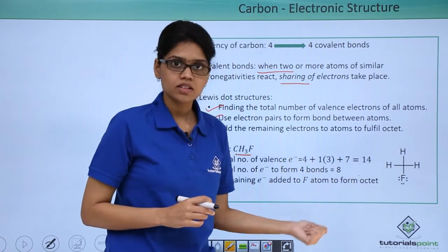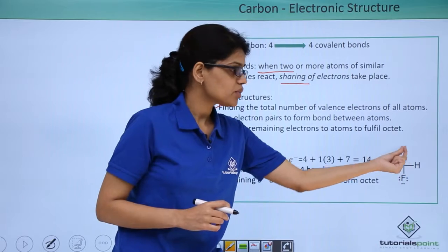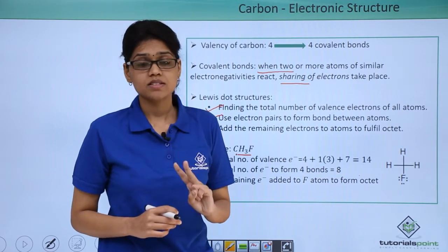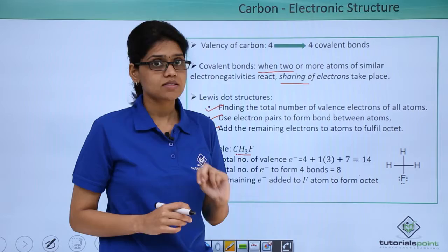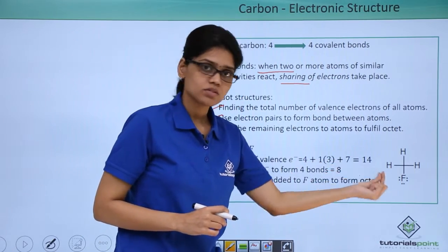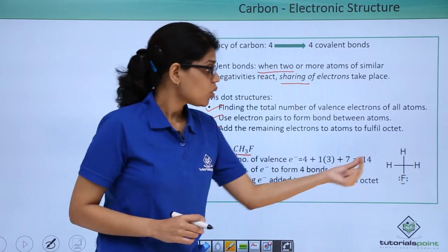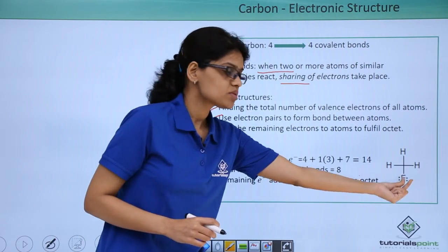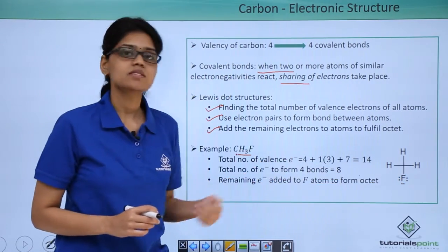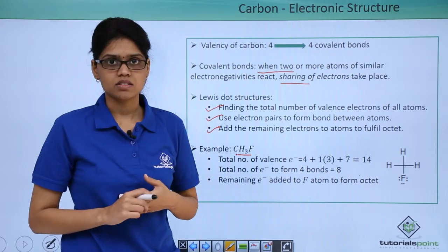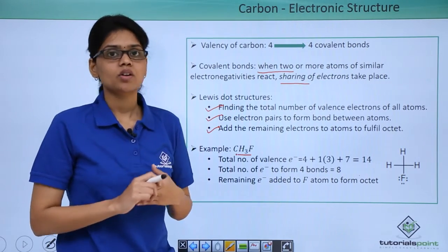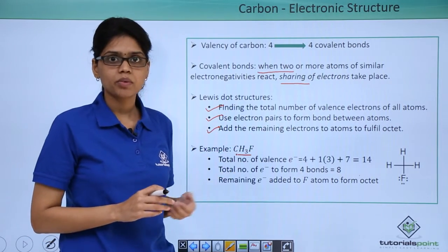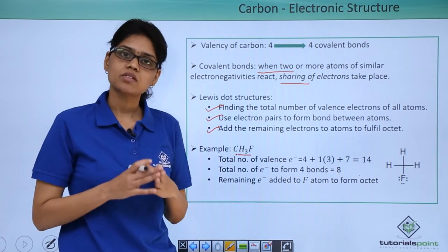If we draw a typical structure, we can see that carbon is fulfilling its octet. Hydrogen does not have an octet but satisfies its duplicity of 2 valence electrons. The only remaining element is fluorine, so we add the remaining 6 electrons to fluorine so that fluorine also achieves octet configuration. I hope you are now clear on what covalent bonds are, how to draw the Lewis structure of a given compound, and what rules to follow while drawing Lewis structures.